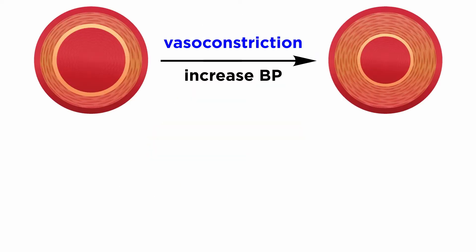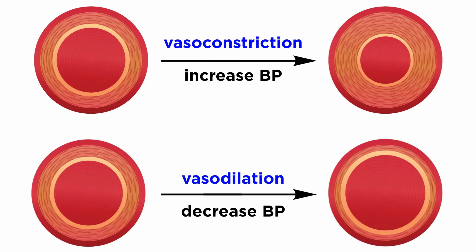We just learned about vasoconstrictors, which increase blood pressure by constricting the blood vessels. Now let's learn about the precise opposite function, vasodilation, which is useful for lowering blood pressure.